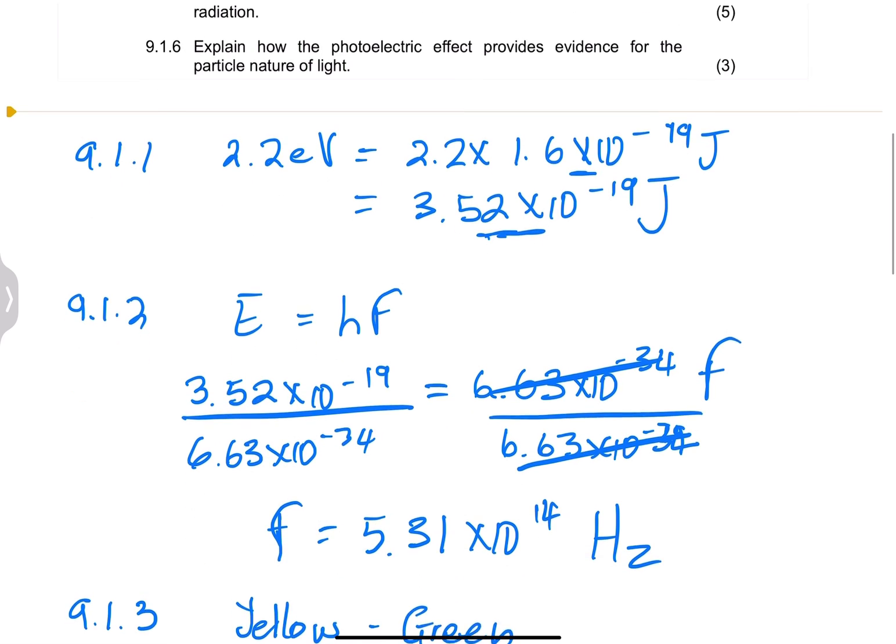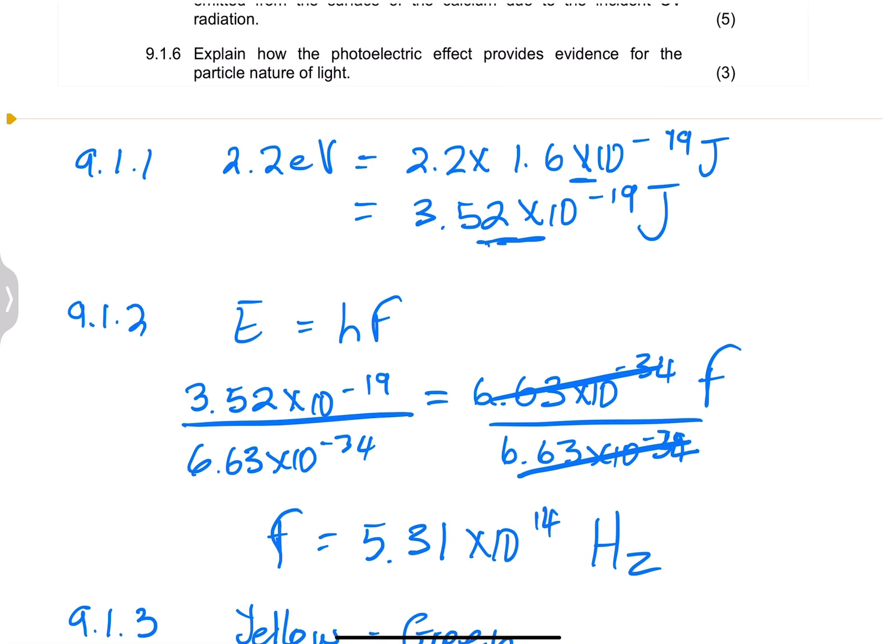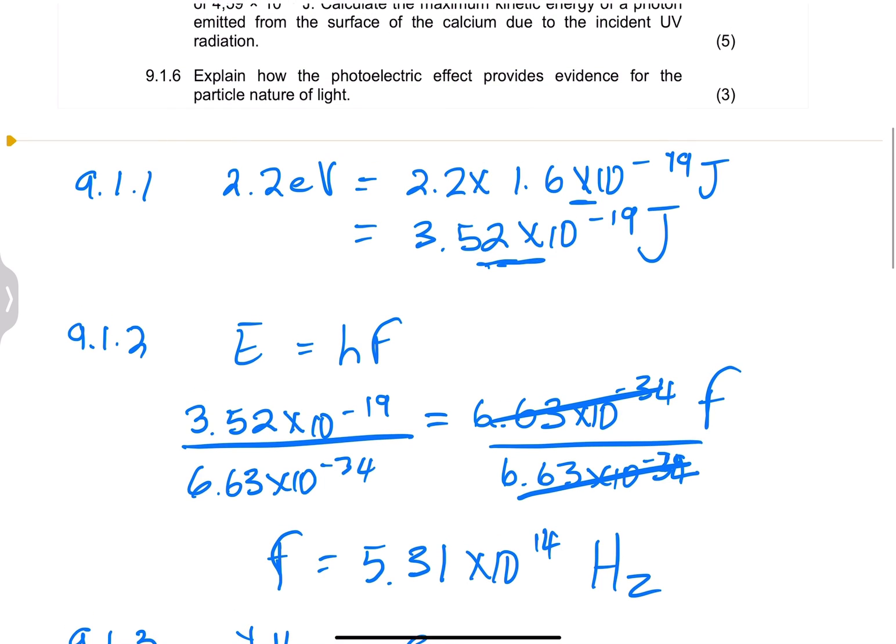You need to explain why it's not the wave nature first, and then go into the particle nature. Remember, if light was behaving as a wave, it means that if we increased the intensity of light, we would eventually get to a point where electrons are emitted. But that is not the case. You could take any frequency and just increase the intensity, and that would make electrons jump out, to be emitted.